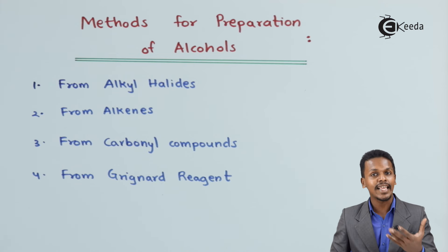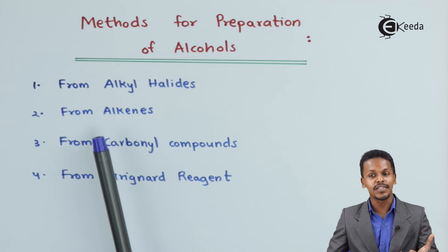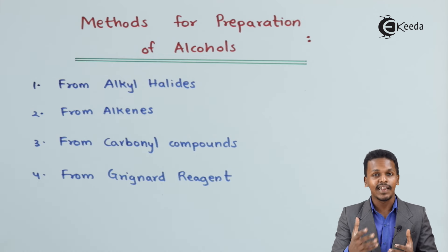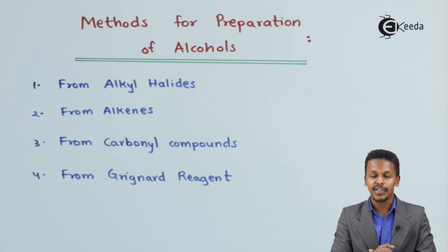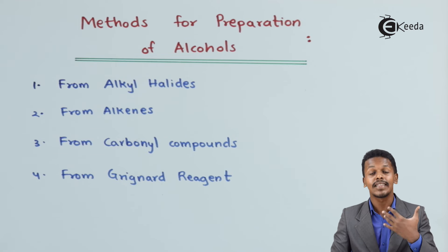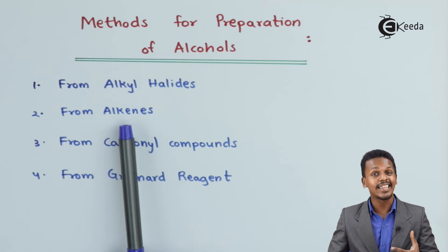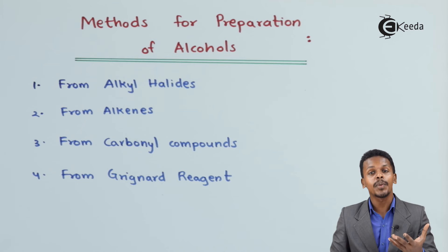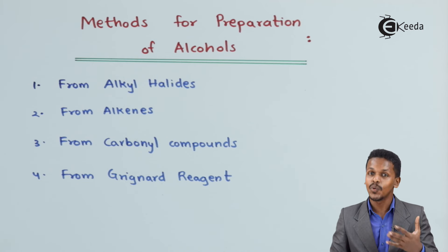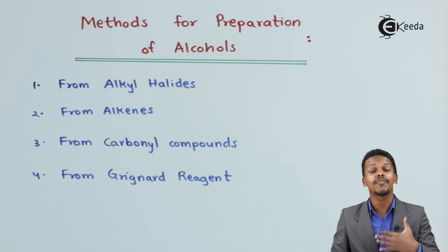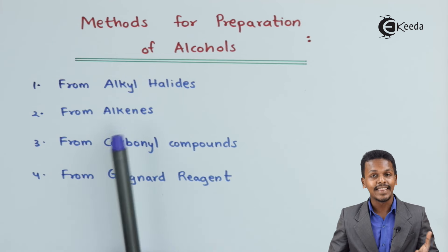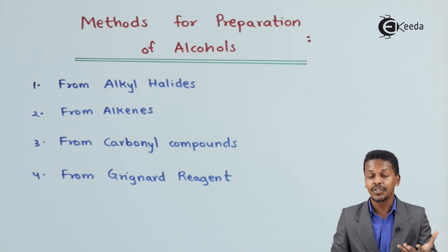The next method is that we can prepare alcohols from alkenes. Alcohols are of primary, secondary, and tertiary types. We can prepare primary alcohol as well as secondary alcohol from alkenes, but they have different methods. To prepare a secondary alcohol we use an acid, and to prepare a primary alcohol from alkene we use the hydroboration process.